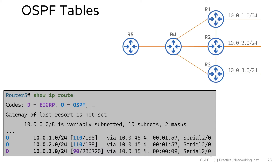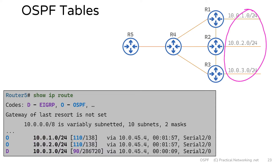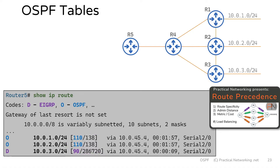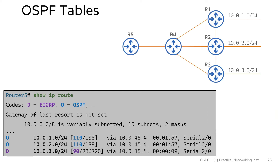The routing table is going to show you all the routes that router 5 knows about. Notice there are three routes that router 5 knows about, correlating to these three networks in our topology. Two of those routes were learned via OSPF, and one of them happened to be learned via EIGRP. The routing table is not an OSPF function — it's simply the router's actual routing table. That wraps up our discussion of the three tables that OSPF uses.